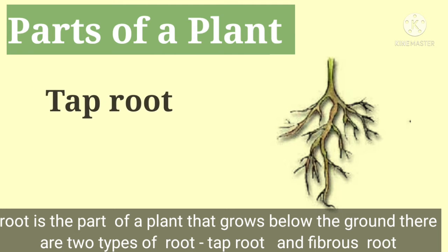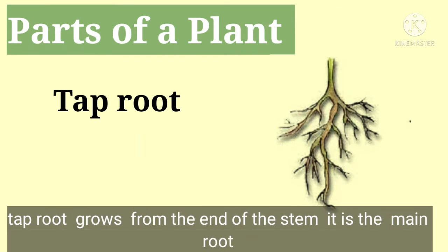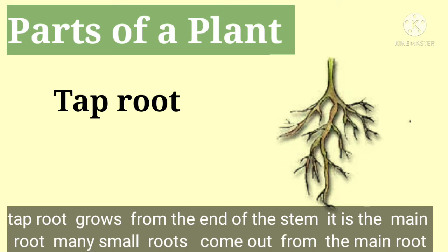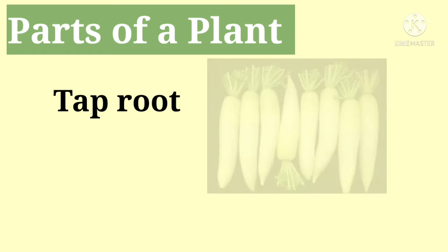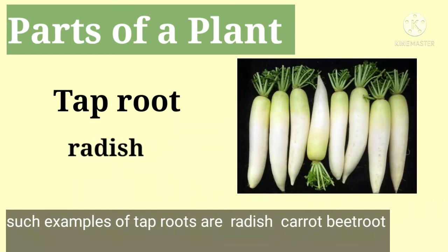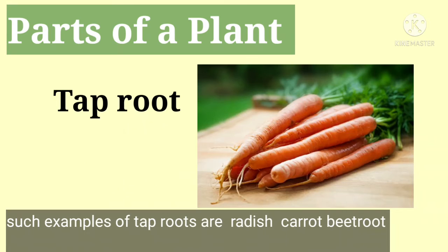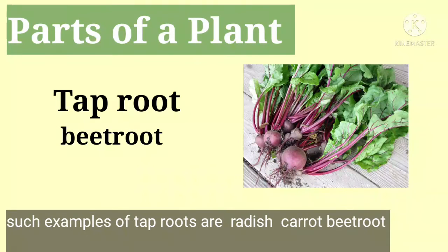The taproot grows from the end of the stem — it is the main root. Many small roots come out from the main root. Examples of taproots are radish, carrot and beetroot.